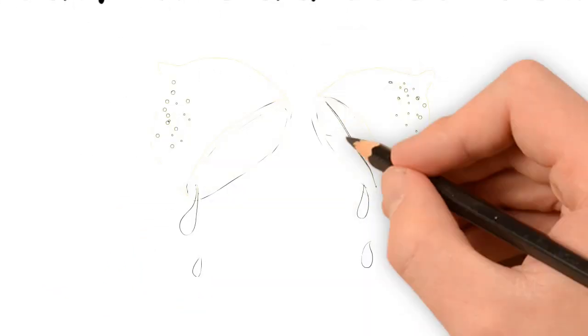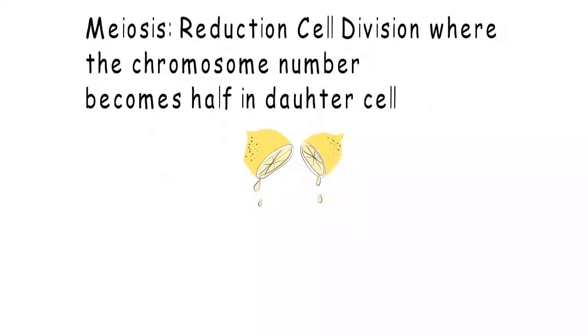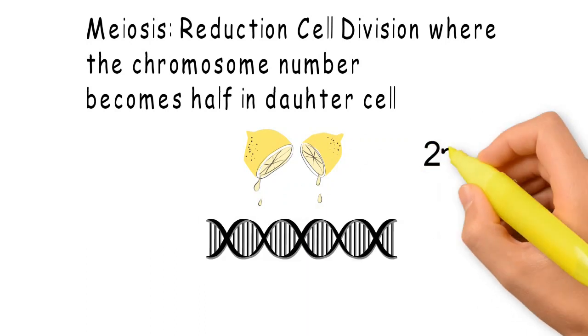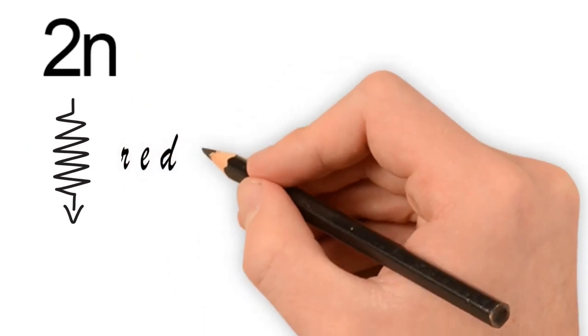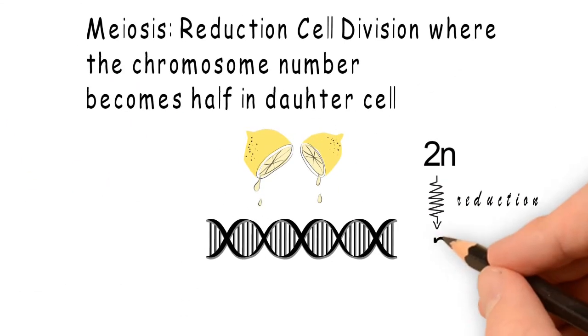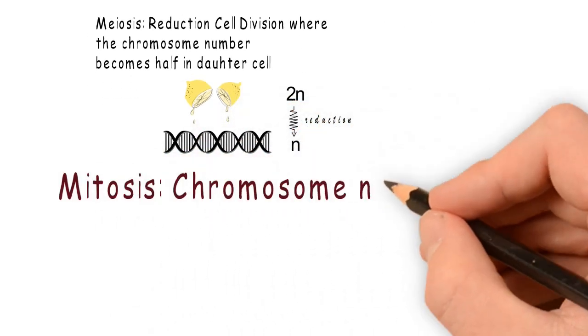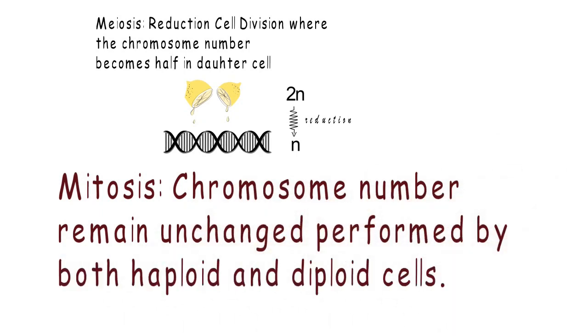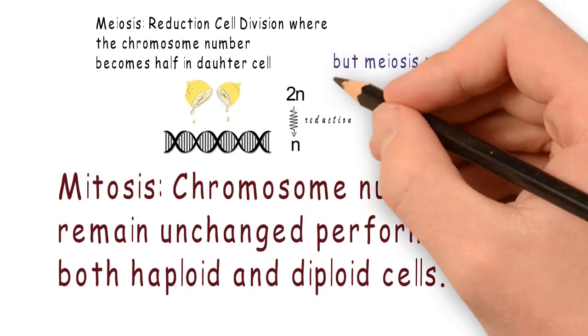Let me explain. Let's take an example of a cell having diploid number of chromosomes, that is 2n. After reduction division, that is meiosis, the new daughter cells will have only n number of chromosomes. In case of mitosis, chromosome number remains unchanged and it is performed by haploid and diploid cells both. Meiosis is performed only by diploid cells.